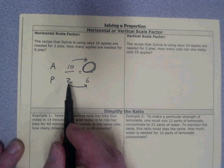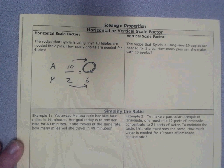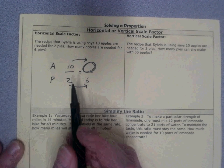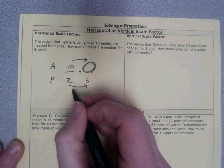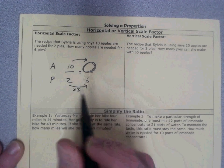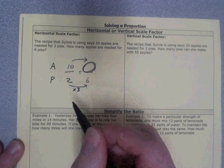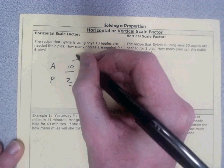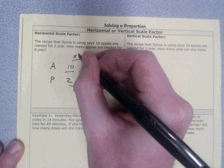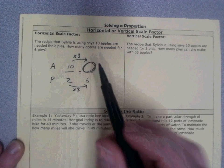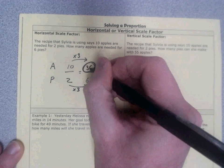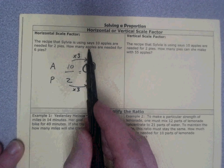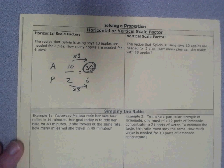We have to ask ourselves, how do we get from two to six by either multiplying or dividing? Well, we can recognize that two times three will give us six. So since we did times three down here, we'll have to do times three up here. So 10 times three will give us 30. And so then 30 apples are needed for six pies.